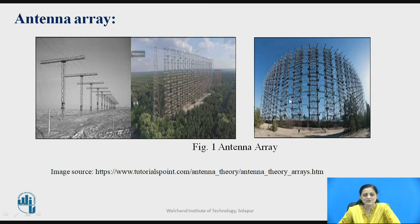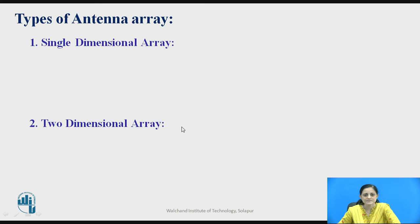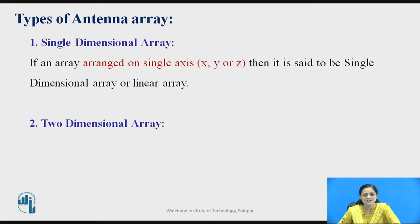The second and third figures also show the same antenna array. An antenna array can be defined with two types. The first is a single dimensional array and the second is a two dimensional array. If an array is arranged on a single axis — x axis, y axis, or z axis — then it is said to be a single dimensional array, also known as a linear array.